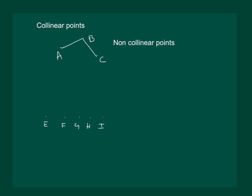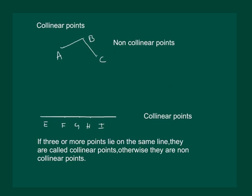Now, consider points E, F, G, H, I. If we join them, they will lie on a line. So, they are called collinear points. We can say that if three or more points lie on the same line, they are called collinear points. Otherwise, they are non-collinear points.